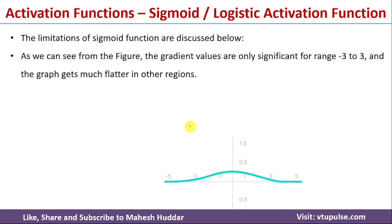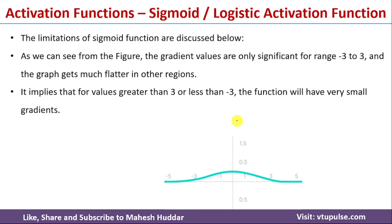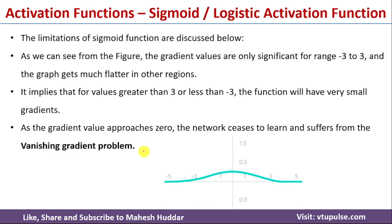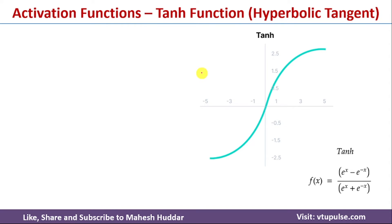Coming back to the limitations of the sigmoid activation function: if you look at this diagram showing the derivative of the sigmoid function, when the input is less than −3 or greater than +3, the values are very flat — meaning the gradients are very small. Because of this, the sigmoid function faces something called the vanishing gradient problem. Since we don't get much change in the weights, learning becomes very slow and the network suffers from the vanishing gradient problem.